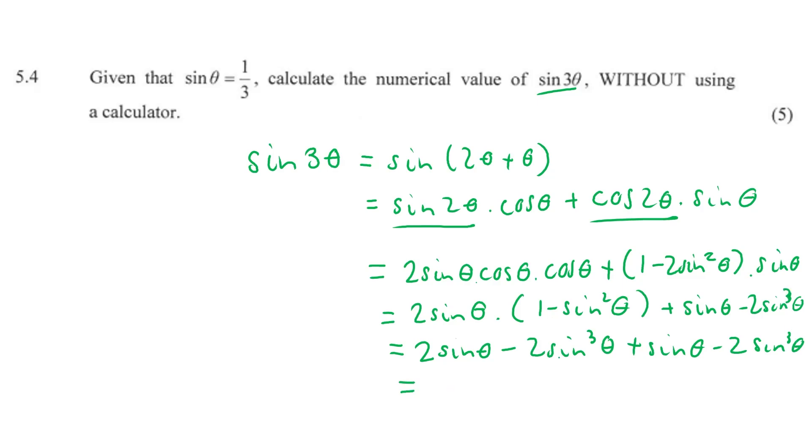Now we can simplify quite easily. So again, let's deal with the highest powers first. So minus 2 sine cubed theta minus 2 sine cubed theta. So that's just minus 2 minus 2. That's how we get the minus 4 sine cubed theta. And then 2 sine theta plus sine theta. That's how we get a positive 3 sine theta.